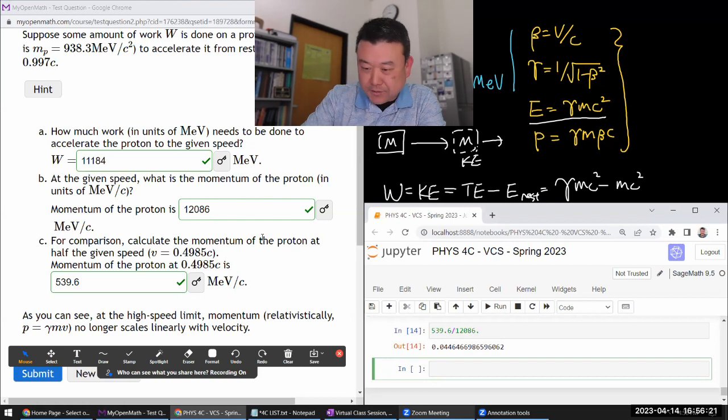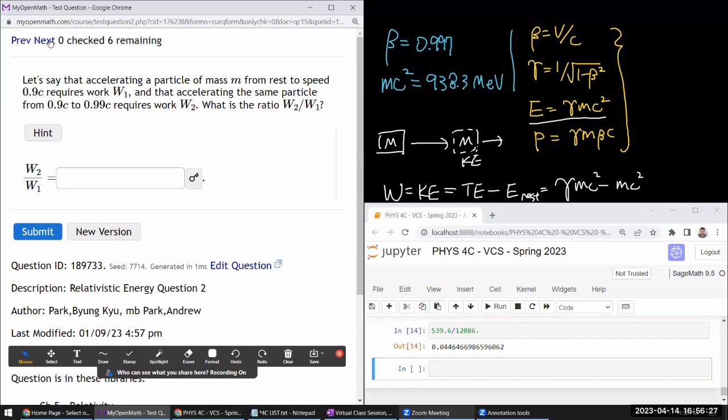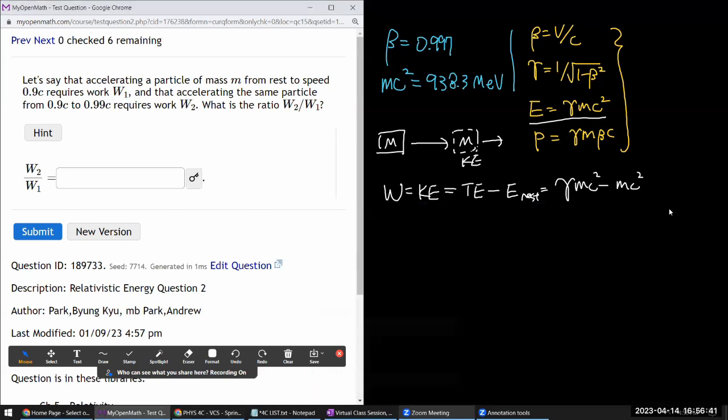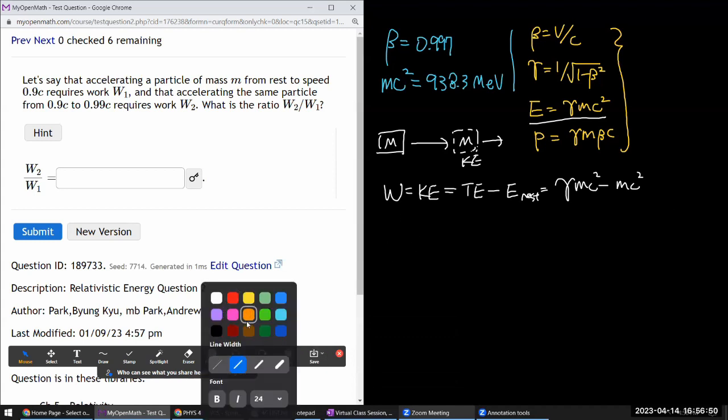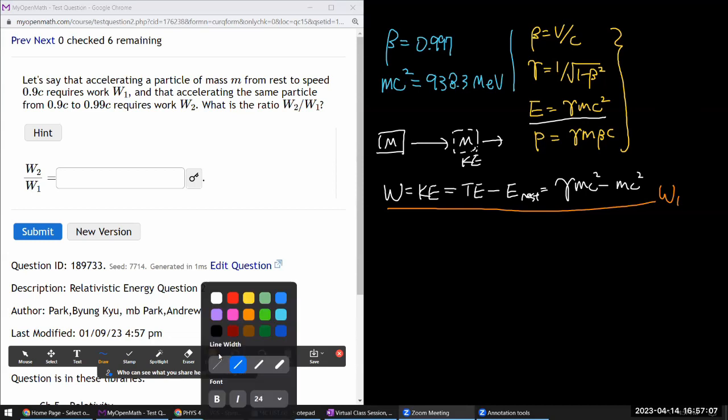So let's look to the next question. I think it should still be dealing with work. It says that accelerating a particle from rest to speed requires some work, and that accelerating the same particle to another speed requires work two. All right. I guess we gotta write some things down. So it's now slightly more complicated. I think I can still use this portion of what I've written down before for work one.